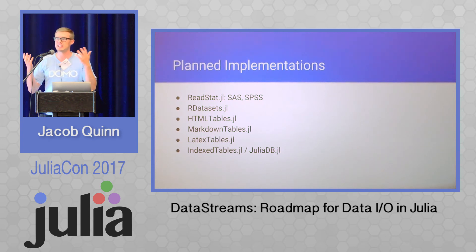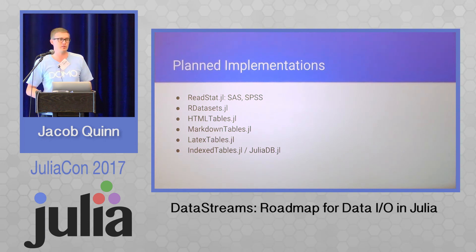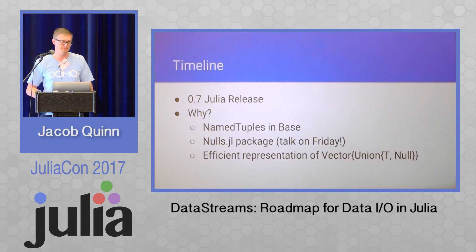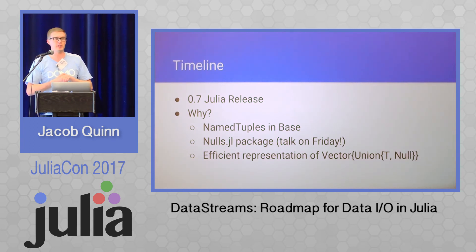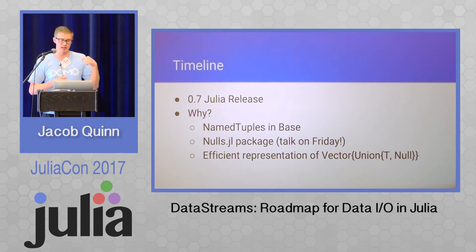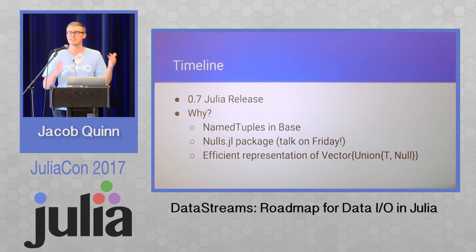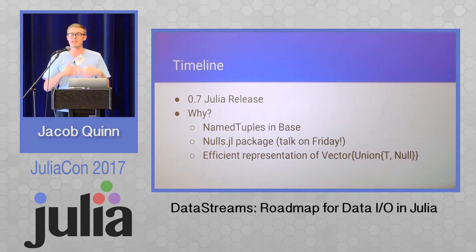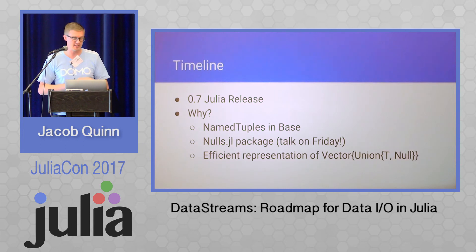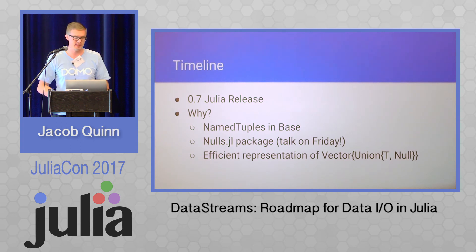JuliaDB — I still need to dig in and maybe go bug Jeff about getting into the internals there. But anyway, that's the roadmap for data streams. A lot of this goodness will be landing in 0.7. I'm on like three branches deep on master, and there are some cool optimizations coming in terms of using alternative forms of null and that kind of stuff. I'm going to be talking again Friday more about the nulls stuff specifically. But yeah, that's data streams. Thanks.